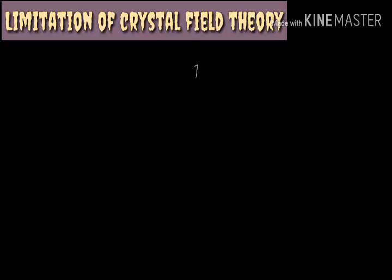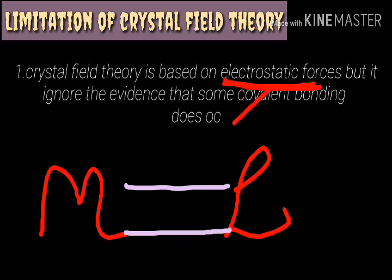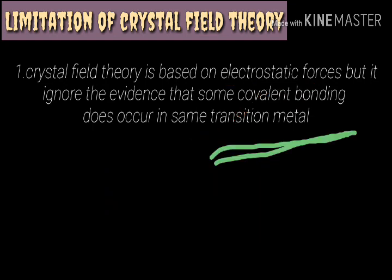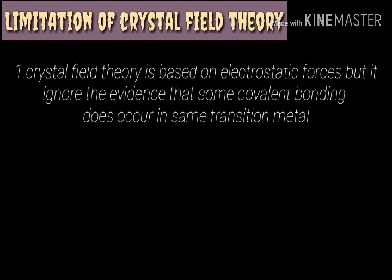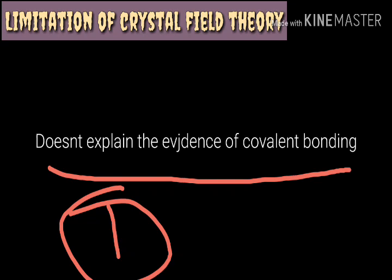I will explain in Hindi. First point: CFT (Crystal Field Theory) is based only on electrostatic forces. It says that whatever bonding occurs in a metal complex is purely electrostatic. It did not account for covalent bonding that also occurs in transition metal complexes. This is a key limitation — it ignored covalent bonding entirely.